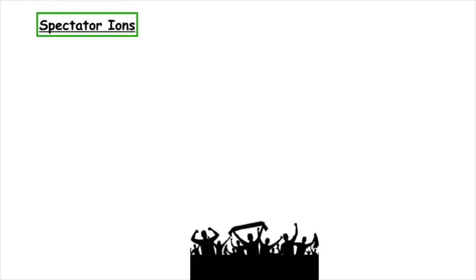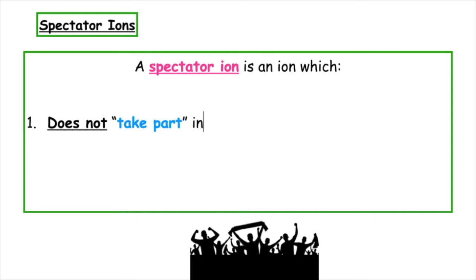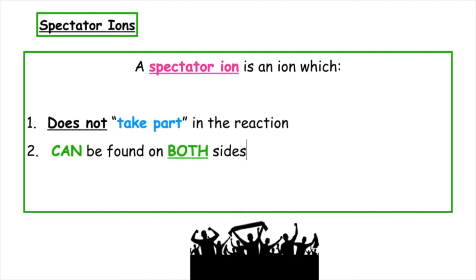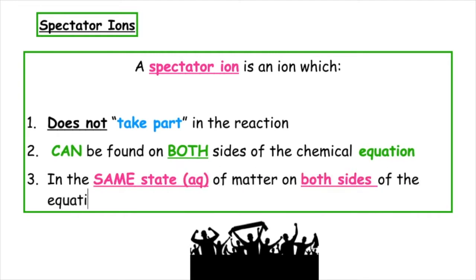So what actually is a spectator ion? A spectator at a football game is someone who watches and does not take part in the game. So a spectator ion is an ion which firstly does not take part in the action. Number two, it can be found on both sides of the chemical equation. And the third point, we must make sure that the ion is in the same state of matter on both sides of the equation. They have to be found in the aqueous state.